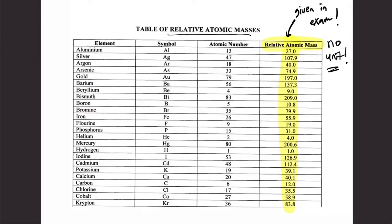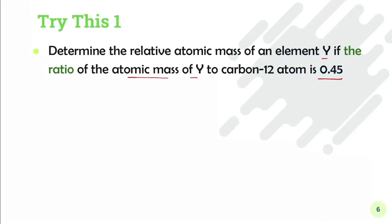Now let's try this question: Determine the relative atomic mass of an element Y if the ratio of the atomic mass of Y to carbon-12 is 0.45. So write the formula: Ar equals atomic mass of Y, element Y, over 1/12 times the atomic mass for carbon-12.